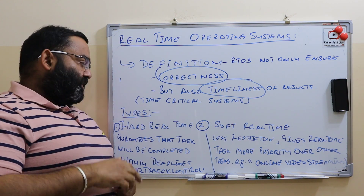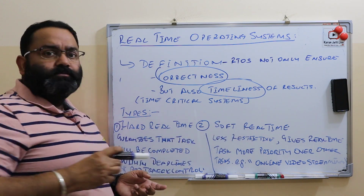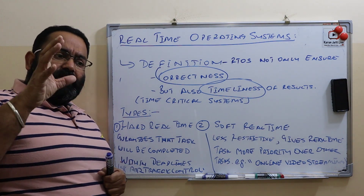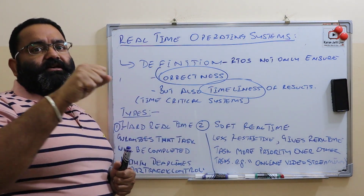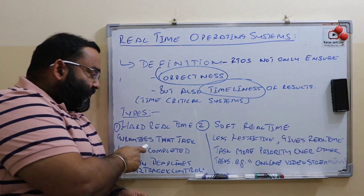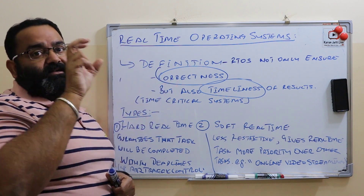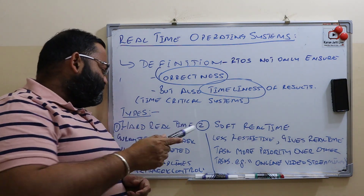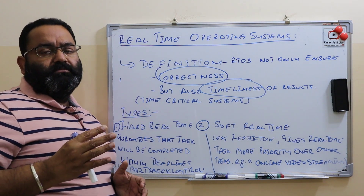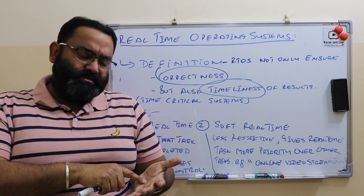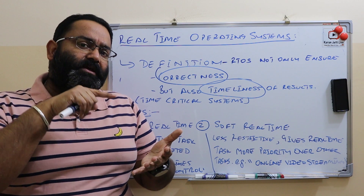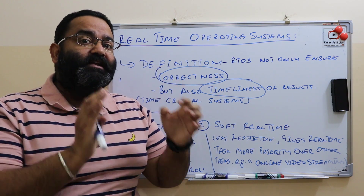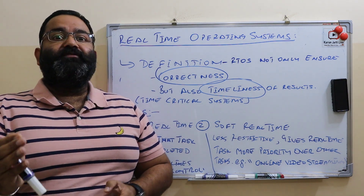Real-time operating systems are of two types: the first is called hard real-time and the second is called soft real-time. In a hard real-time system, our topmost priority is to generate the result within the specific deadlines. It guarantees that the task will be completed within the deadline — we cannot afford to delay results after the deadline. This is because the delay can be life-threatening.